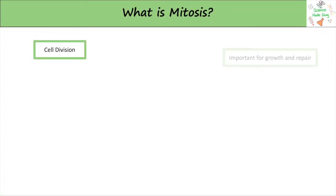Mitosis is the process of cell division. It's the way our body cells grow, and it's really important for repair too. For example, if you have a cut on your skin, your cells will divide and replace the damaged cells.